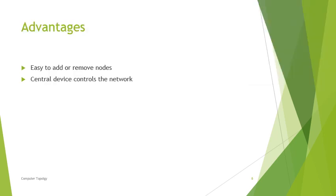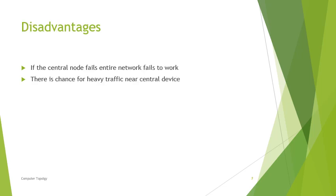Advantages of star topology: it is easy to add or remove nodes, and the entire network is controlled by a central device. However, if the central node fails, the entire network fails to work. There is also a chance of heavy traffic near the central device.